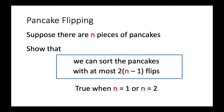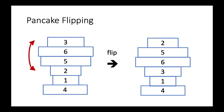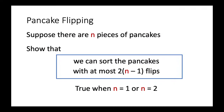Suppose there are n pieces of pancakes. We want to show that by using flippings we can sort the pancakes, and moreover the number of flips needed will be at most 2(n−1). We can verify this is true when n equals 1: with just one pancake, no flipping is needed, and 2(1)−1 = 0 flips, which checks out.